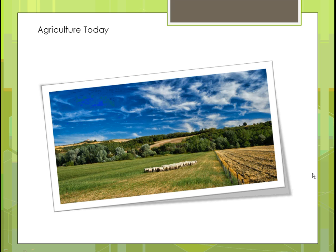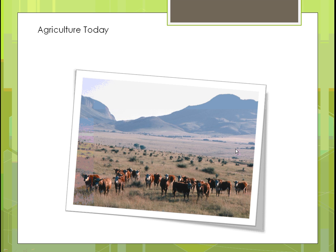Here's a picture of how our agriculture is — some sheep out in the field eating the grasses, and next to it you see a field separated from them which looks like an old corn field. Here's another picture of cattle out on the range close to the mountains, somewhere out west, grazing and eating the grasses that are there.